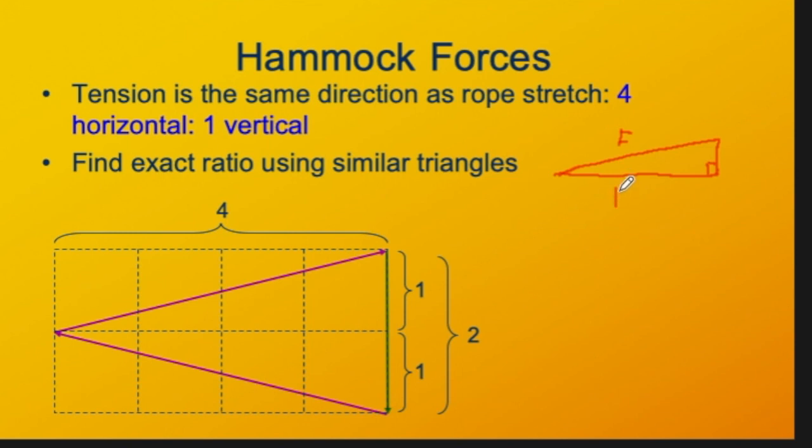This is its component in the horizontal direction, F sub X. This is the component in the vertical direction, F sub Y. From the theorem of Pythagoras, we know that the square of the hypotenuse, which is F, is equal to the sum of the squares of the other two sides.